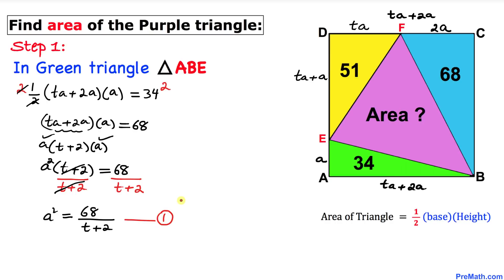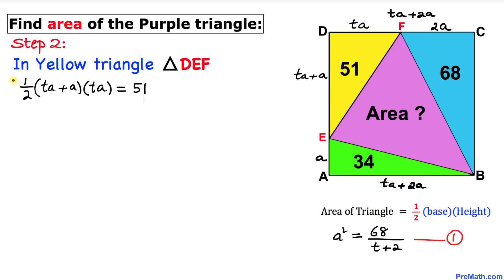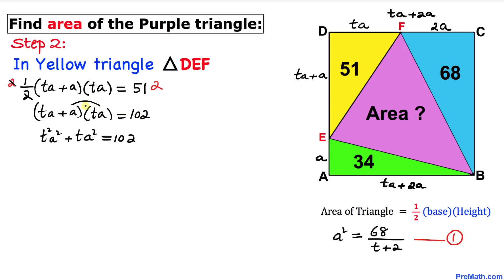Now let's focus on yellow triangle DEF. We know the area is 51. The area formula gives us one-half times (ta + a) times (ta) equals 51. Multiplying both sides by 2, we get (ta + a) times ta equals 102. Distributing, we get t²a² plus ta² equals 102.